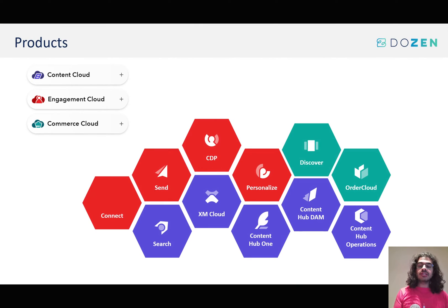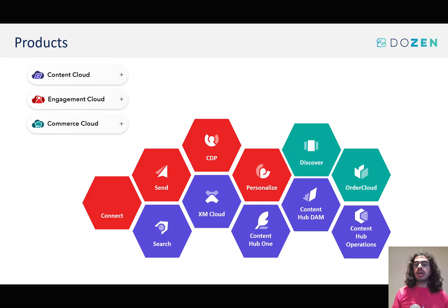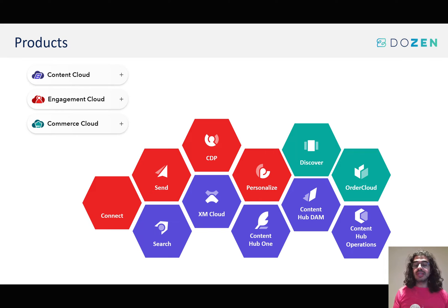This is the new portfolio for the composable DXP, with Connect, Send, CDP, Personalize as Engagement Cloud, Discover and Order Cloud as Commerce Cloud, and then Content Cloud, which has Search, XM Cloud, Content Hub ONE, Content Hub DAM, and Content Hub Operations. As you can quickly see, there are a lot of components here — a lot of products that some seem to be doing the same thing or very similar scenarios.